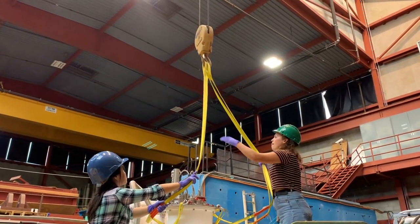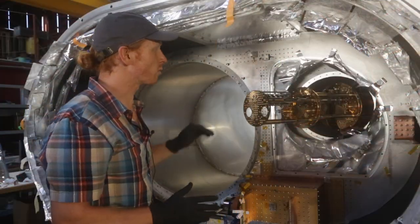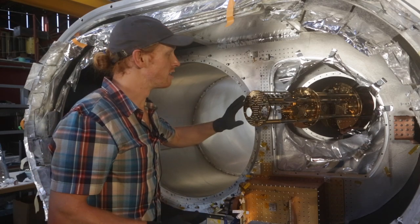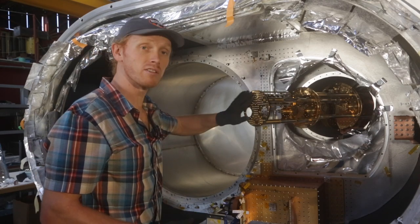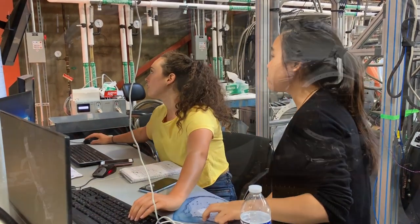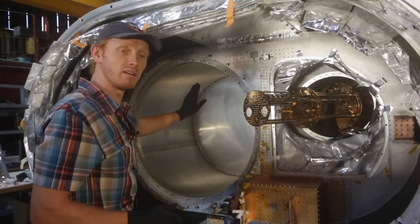It's been inserted into our telescope, and this configuration is just while we're working on it. As you can see right now, it's fairly Spartan. There's not a lot on this plate, but we'll start adding heat straps and thermometry to other components. The whole purpose of this is to cool down our detectors, which will live here sometime in the near future.